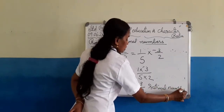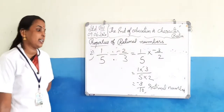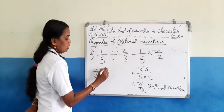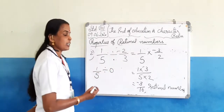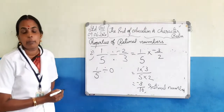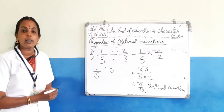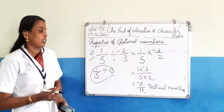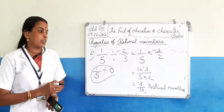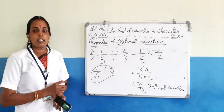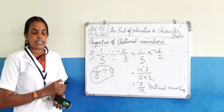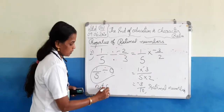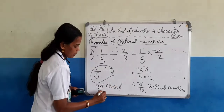We divided two rational numbers and got again a rational number. But if we are dividing by 0, what will happen? We can't divide a number by 0, since division by 0 is not defined. So when doing division of two rational numbers, we can't always say the answer is a rational number — rational numbers are not closed under division.